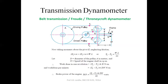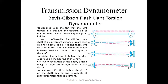The next type of transmission dynamometer is Davis-Gibson flashlight torsion dynamometer. As this type was developed by scientists Davis and Gibson, it is called Davis-Gibson torsion dynamometer.